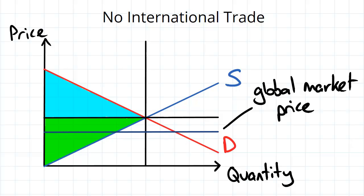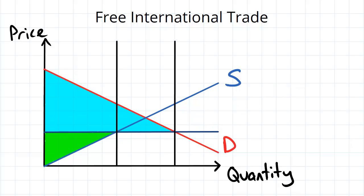So surplus with free international trade looks something like this. You now have two different quantities: this is the quantity being produced and sold domestically, and this is the quantity being bought domestically from both imports and from domestic production.